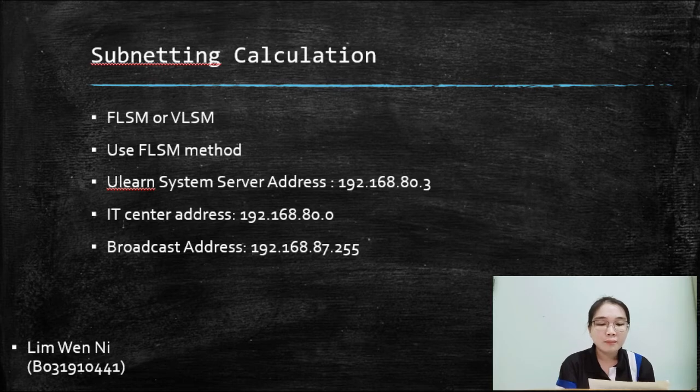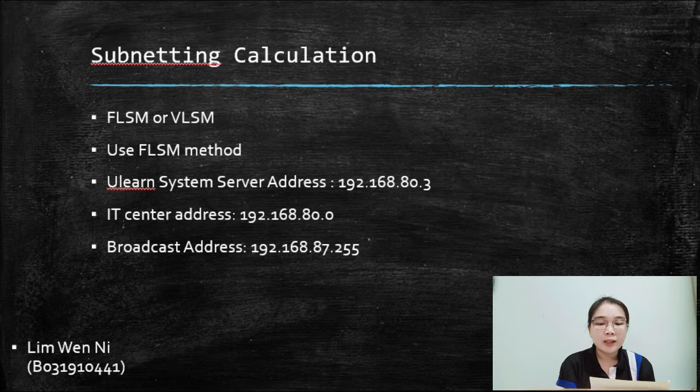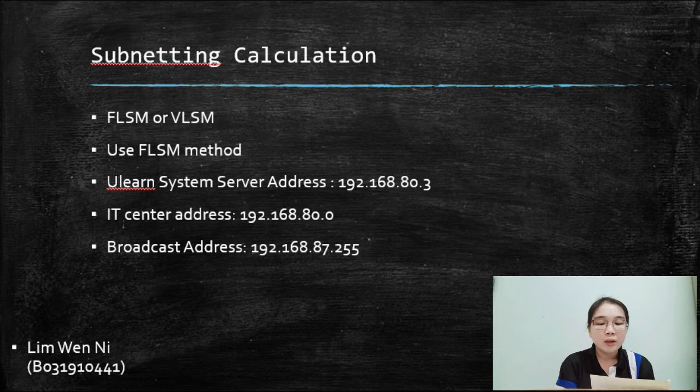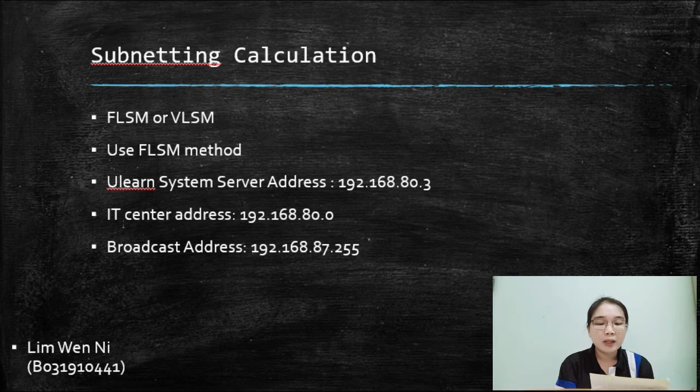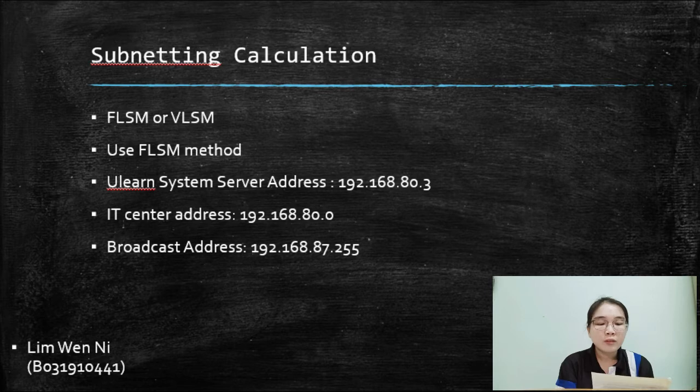After the FLSM calculation, I got the IT center network address as 192.168.80.0, ULEARN system server address as 192.168.80.3, and I also know the broadcast address of the ULEARN system is 192.168.87.255. That's all the new things that I learned from this project. Thank you.